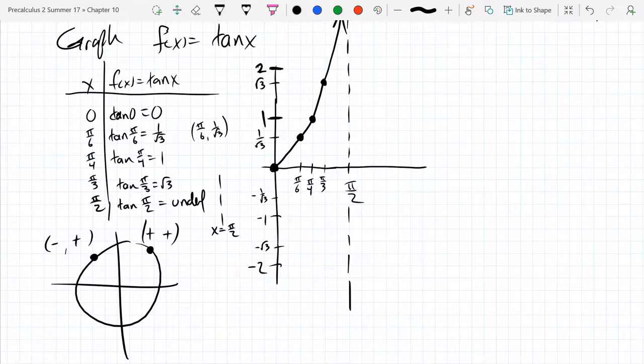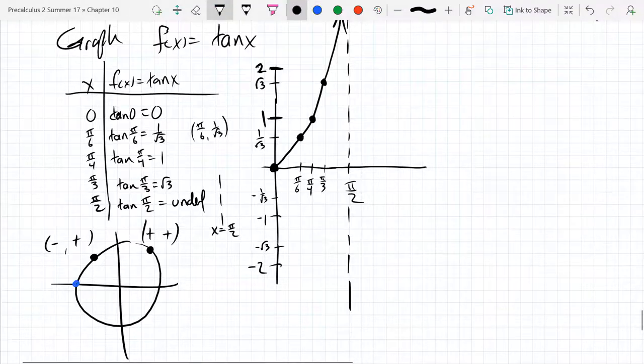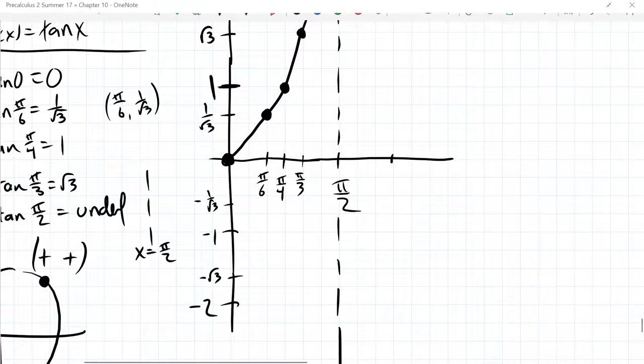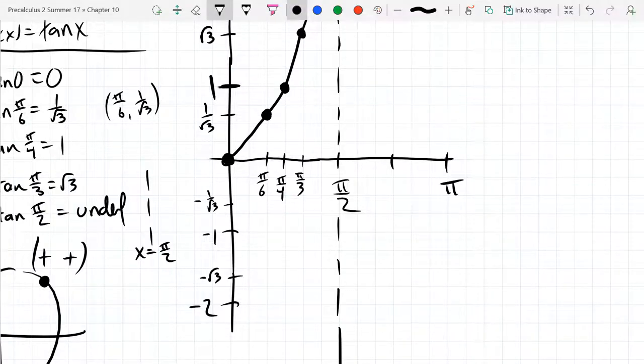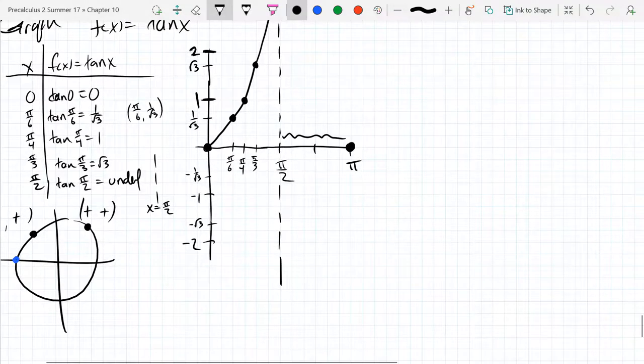When do we hit zero? Tangent is zero right down there. So the next place we're going to have zero is when we hit pi. We're going to have an x-intercept. And in between all the values in here, all these x values were negative.